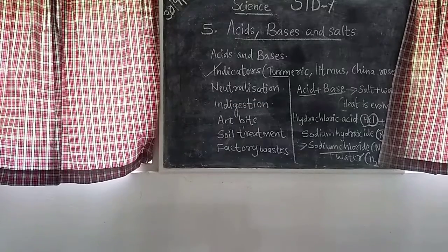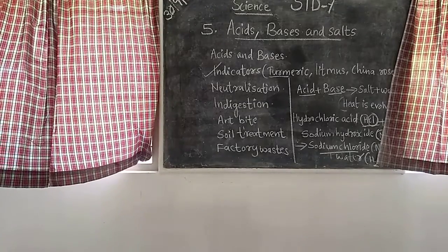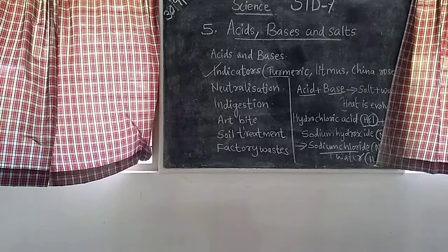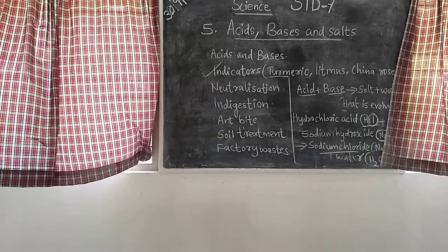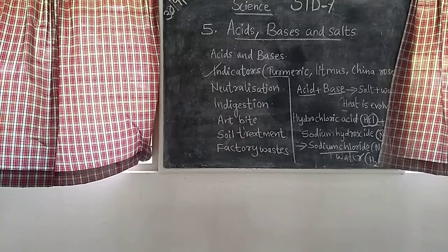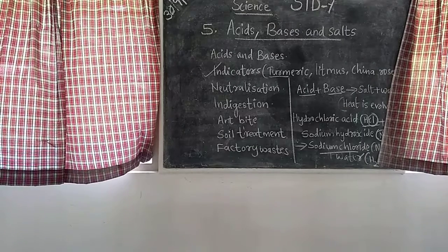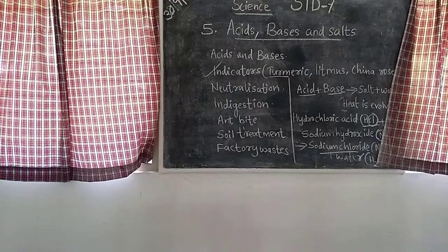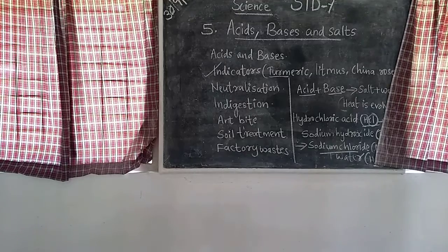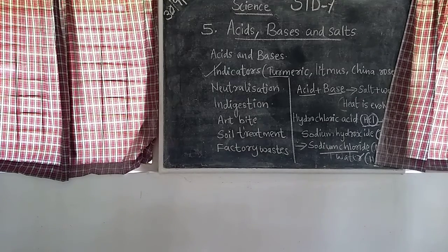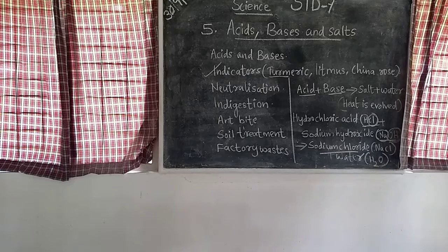Next is factory waste. The waste from factories contains acids. When allowed to flow into water bodies, the acid kills fish and other organisms. Factory wastes are neutralized by adding basic substances.